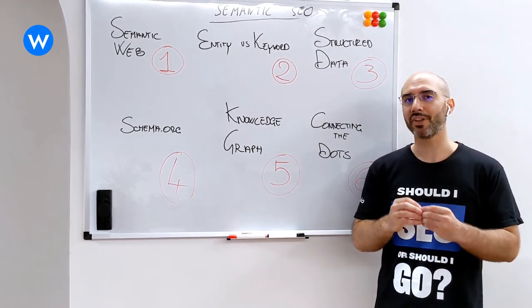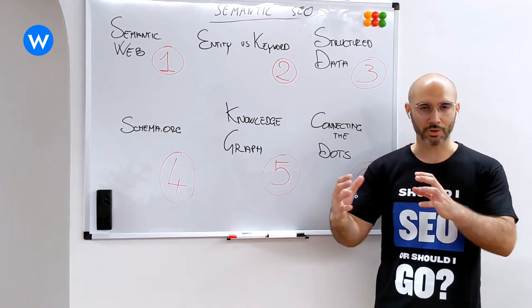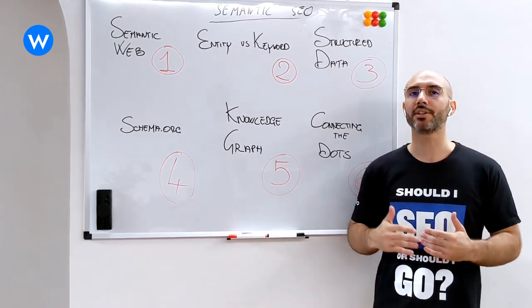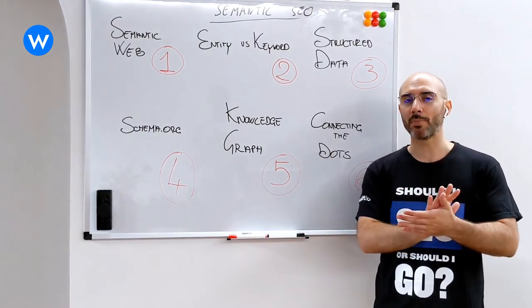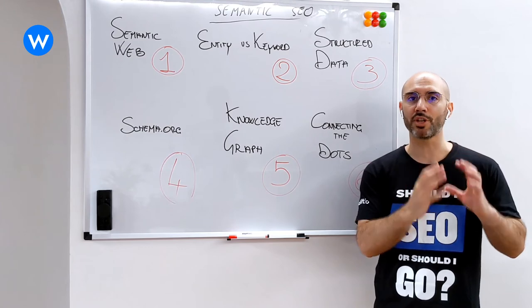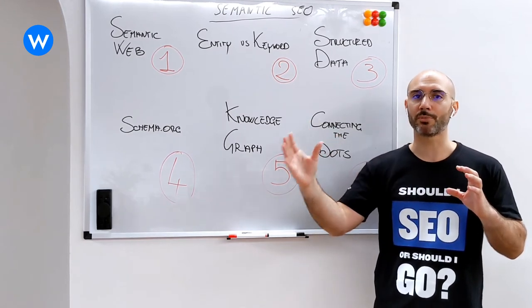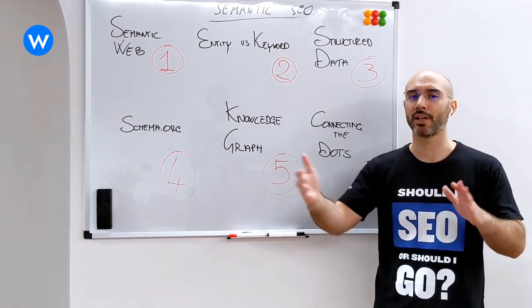Structured data is a way for us to give structure to information that we have on the web, so that search engines can easily understand it and process it. We make something which is not machine readable into something which is machine readable. That's what is at the core of structured data.